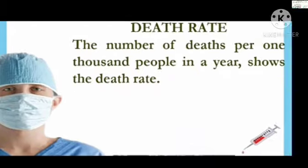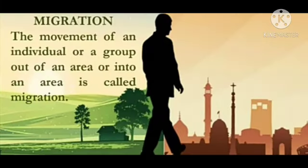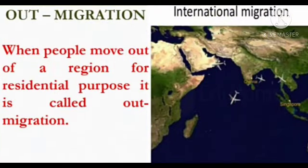And life expectancy is the average lifespan of an individual expected in an area at the time of birth. Next is migration — the movement of an individual or a group out of one area to another is called migration. When people move into a region from outside for residence, it is called in-migration. All these factors — birth rate, death rate, life expectancy, and migration — affect population growth.